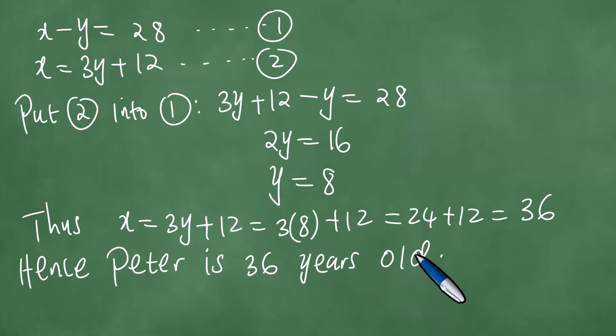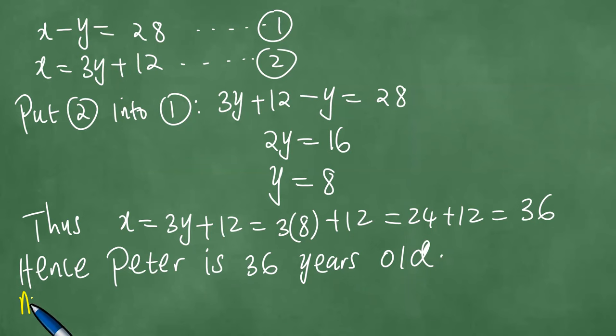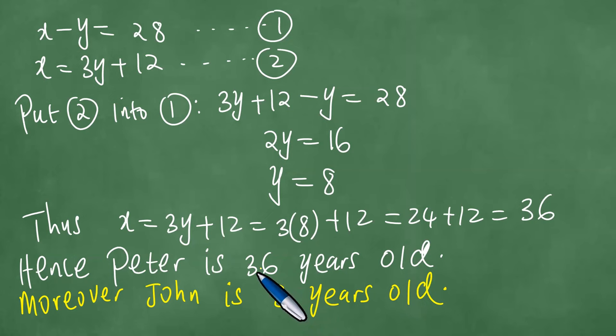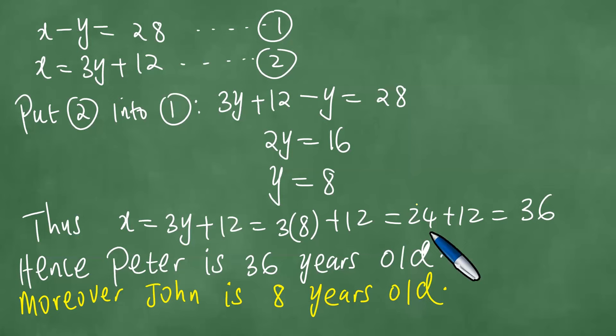They did not ask us to find John's age. But we note that, moreover, John's age is exactly y. So John is 8 years old. If you analyze this and realize that 36 minus 8 gives us exactly 28, meaning indeed, Peter is 28 years older than John, which justifies the first line of the question. And we have solved this problem in full. Thanks everybody. Goodbye to you.